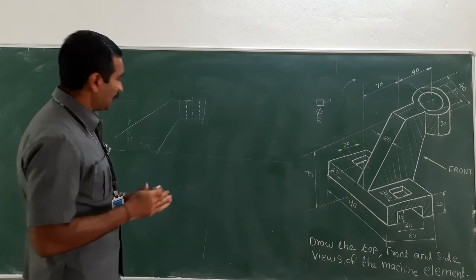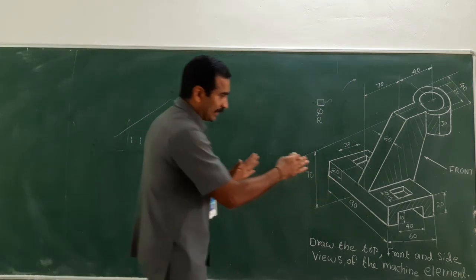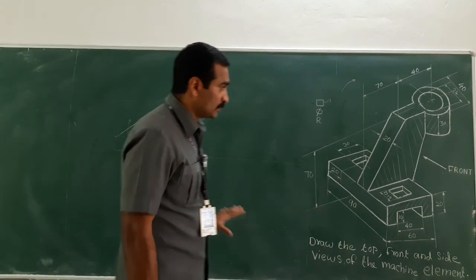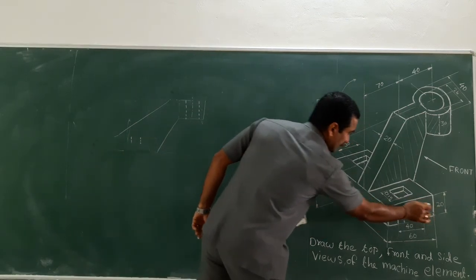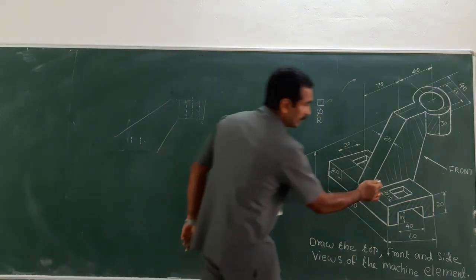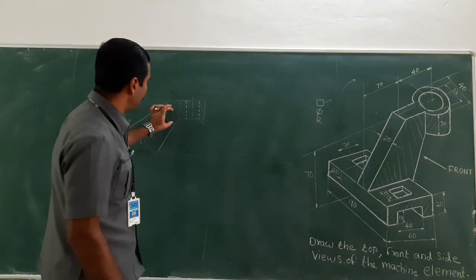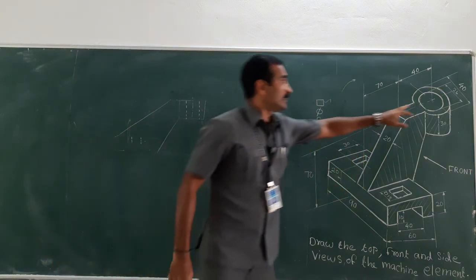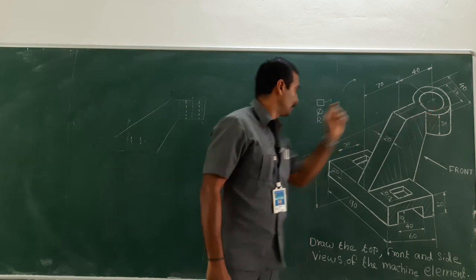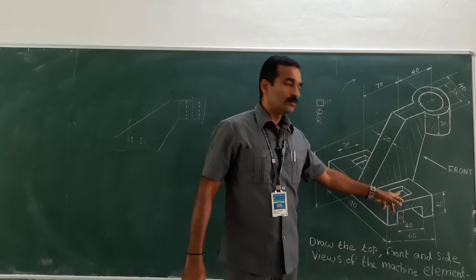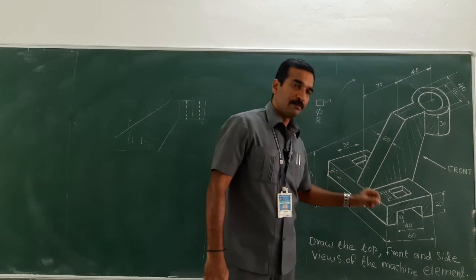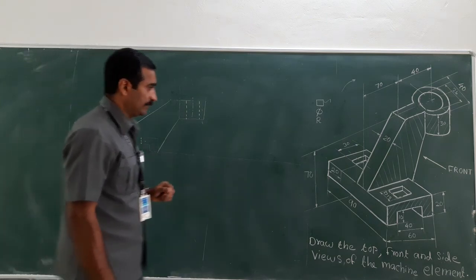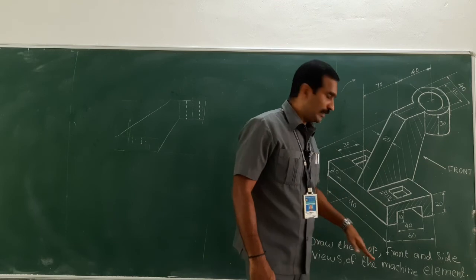Before I proceed to the next view, let me go through each and every part of this machine element to check if anything is missed out. This particular base portion has been captured. This arm has been captured. Then this extended portion — the cylinder — has been captured. And this circle is invisible within the cylinder, which I captured here. And there is one square through hole on the base above the groove, which I captured here. Now I need to draw the top view.